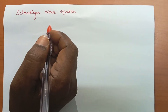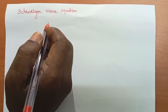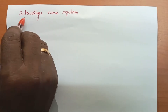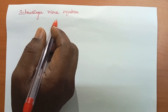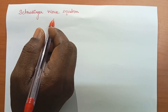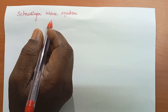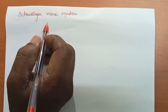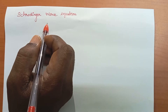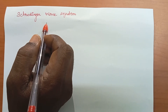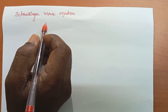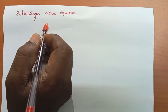Today we are going to discuss the topic of Schrödinger wave equations. The Schrödinger wave equation describes the wave nature of the particle in mathematical form.